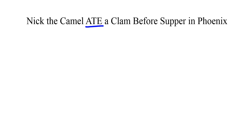So, the mnemonic device that we're going to use for this is Nick the Camel ate a clam before supper in Phoenix. Now, this is a device that can be used not only to remember what the different ions are, nitrate, carbonate, chlorate, borate, sulfate, and phosphate, but they'll actually help us with the formulas and charge.